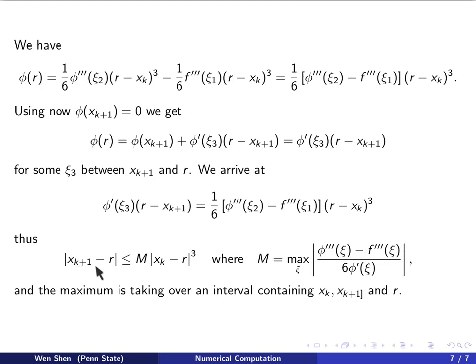So this gives us the following, |xₖ₊₁ - r| will be less than the absolute value here to the power 3 and some constant.